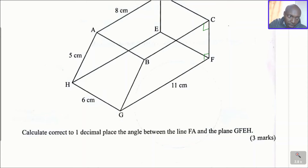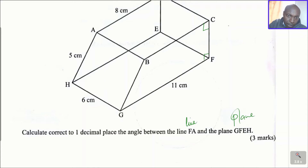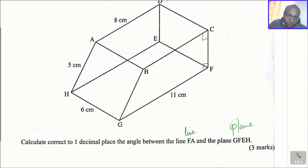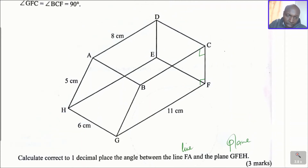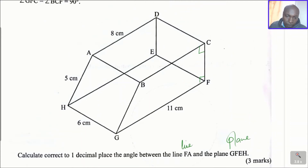So the scheme requires us to find the angle between a line and a plane — the line being FA and the plane being GFEH. To get the angle between a line and a plane, the first thing we do is get the projection of that line onto that plane.